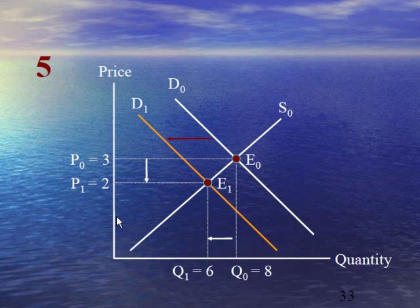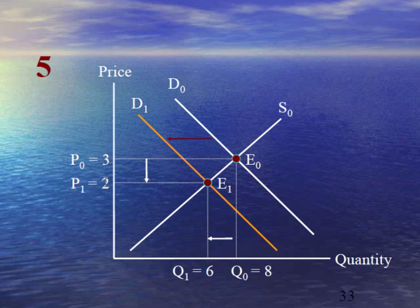Case number 5 explains that there is no shift in supply but there is a decrease or fall in demand. As a result, the demand curve shifts from D₀ to D₁. In this case, equilibrium is shifting from E₀ to E₁ and as a result, the equilibrium price moves from 3 to 2 and equilibrium quantity moves from 8 to 6.